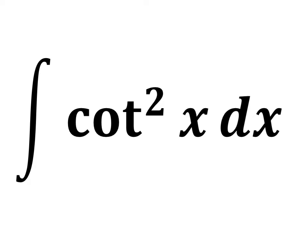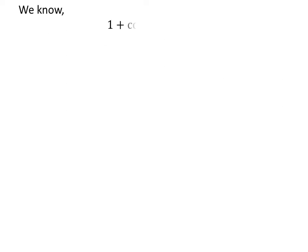In this video, we will learn to find the integral of square of cotangent of x with respect to x. We know the famous trigonometry identity: 1 plus square of cotangent of x is equal to square of cosecant of x.